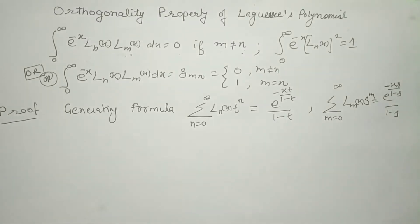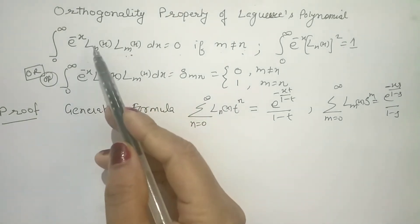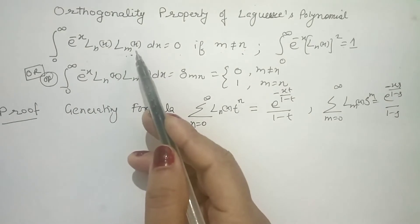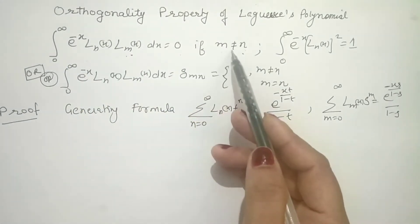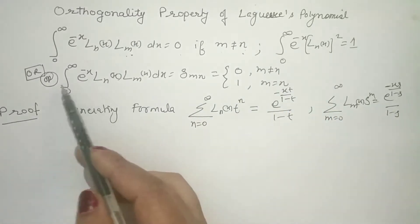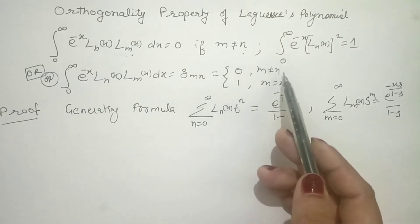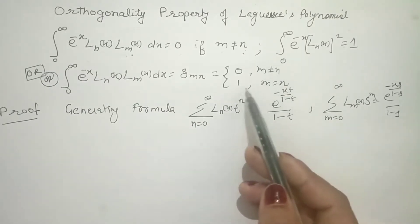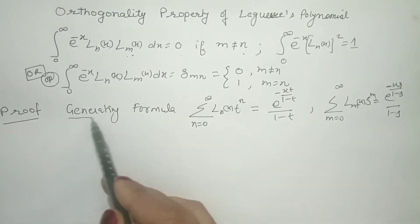Good morning students. The next topic is the orthogonal property of Laguerre polynomials, which states that the integral from 0 to infinity of e^(-x) · Ln(x) · Lm(x) dx must equal 0 if m and n are unequal, and equals 1 if they are equal. We are going to prove this result using the generating formula.